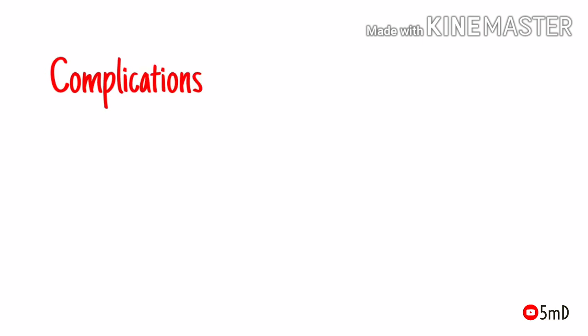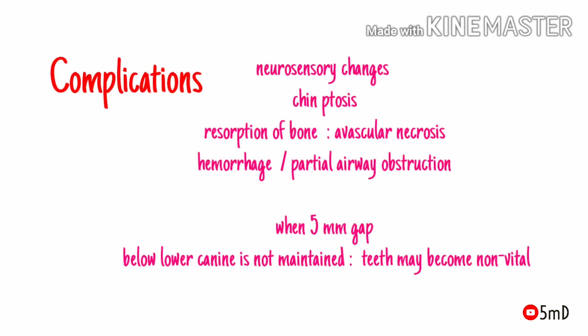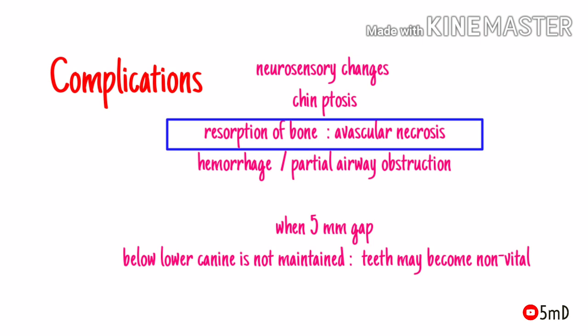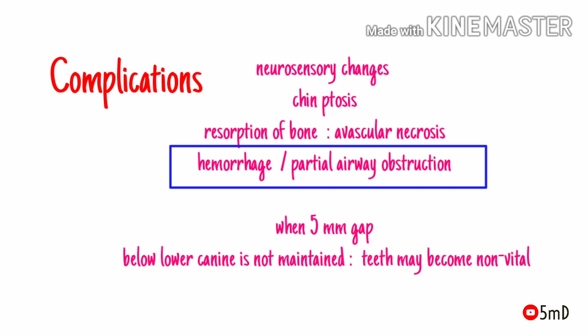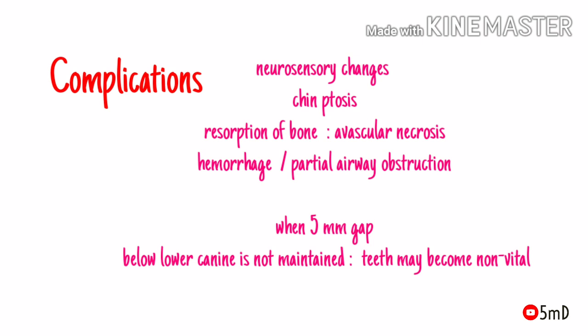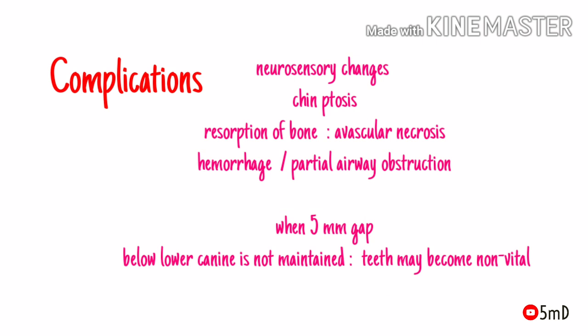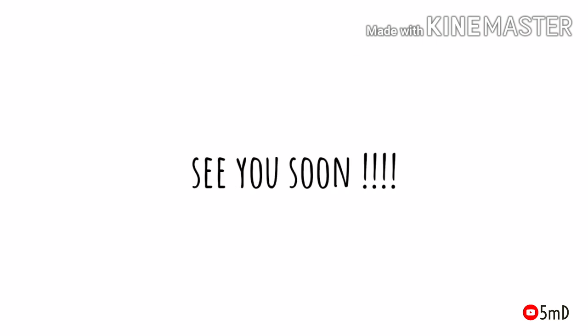Complications in genioplasty include prolonged neurosensory changes due to nerve injury or neuropraxia, chin ptosis due to improper positioning of the mentalis muscle, and resorption of bone or avascular necrosis of the mobilized segment. Hemorrhage and airway compromise are rare but possible complications. If the 5 mm gap between the root of the canine and the osteotomy is not maintained, the teeth could become non-vital due to lack of proper blood supply. And that's genioplasty in short.